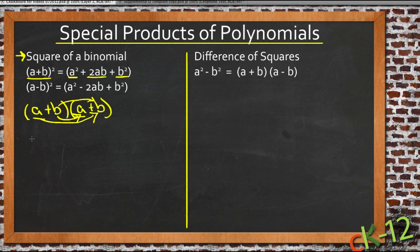So if you want to see it with numbers, we could do (x+2)², which would be (x+2) times (x+2). So we'd have x times x, that's x². x times 2 is 2x,